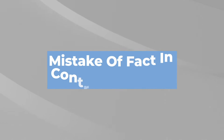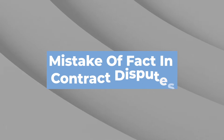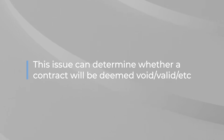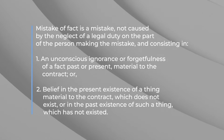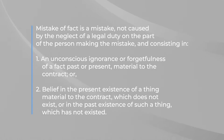Hi, I'm Gregory Brown. I'm a partner and business trial lawyer with the law firm of Brown & Charbonneau. Today we're going to talk about another contract issue, that is, mistake of fact in contract disputes. This issue is something that not too many people know about and can really affect whether a contract will be deemed void, valid, or avoidable. The California Civil Code gives you the definition of it in Section 1577.